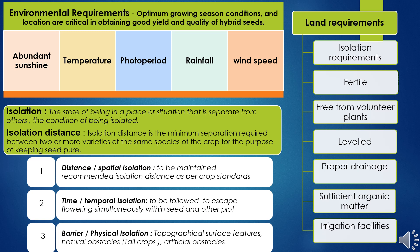Isolation is of three types: first, distance isolation; second, time or temporal isolation; and third, barrier or physical isolation. Distance isolation is maintained as per the recommended isolation distance, which varies from crop to crop. Time isolation is followed to escape simultaneous flowering between seed and other plots. Barrier or physical isolation refers to topographical features, natural obstacles, tall crops grown, or artificial obstacles raised.